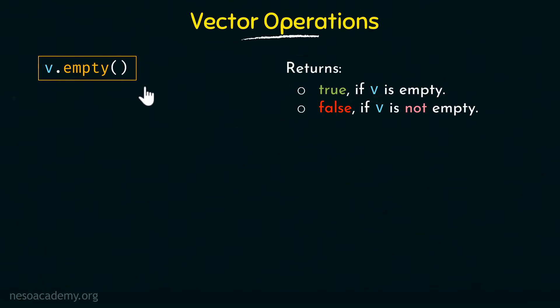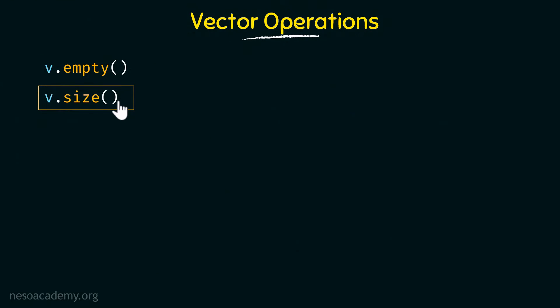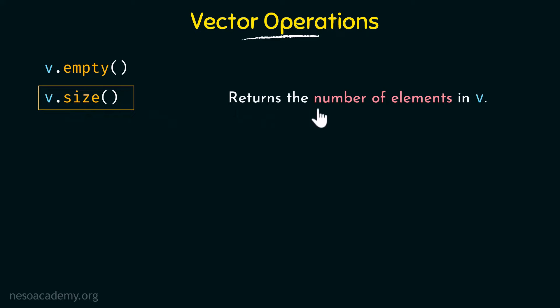Now coming to the next operation, we have the size operation. What this does is it returns the number of elements in the vector v. The syntax is the name of the vector followed by dot and the size operation, which checks how many elements are in that vector and returns the size.